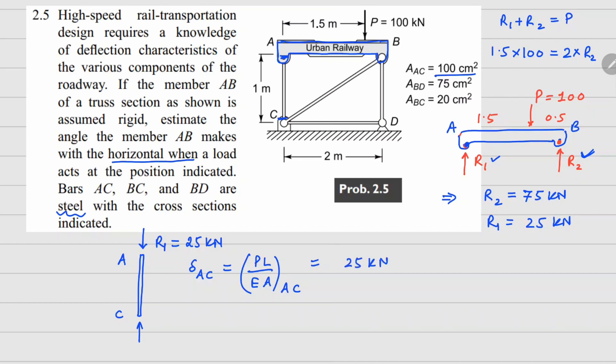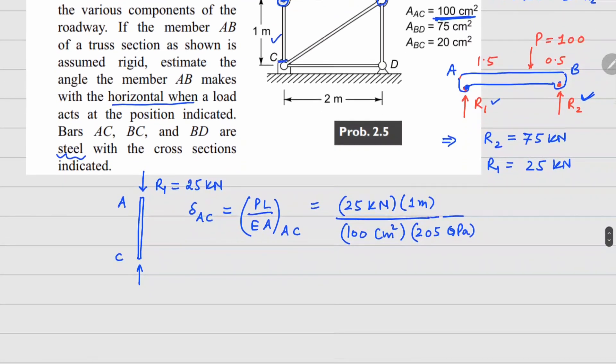All of these numbers will be coming from your AC. So the force in AC is 25 kilonewtons, the length here is 1 meter, the area is 100 centimeter square, and your elastic modulus is 205 gigapascals, that is for steel. So if I do this calculation, the number that I get is 0.0012 centimeters.